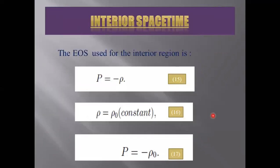Now I'm going to evaluate all the mathematical formulations of the regions one by one. First of all, here comes the interior region of the gravastar. The equation of state used in the interior region is given in equation number 15. If we consider ρ = ρ₀ = constant, then equation 15 turns out to be equation 17.